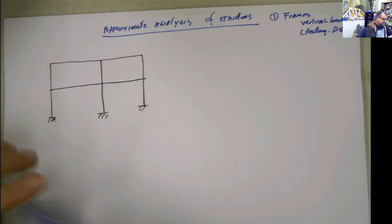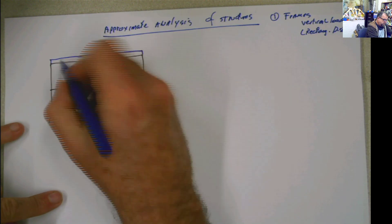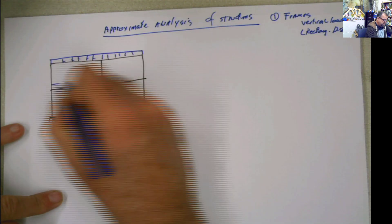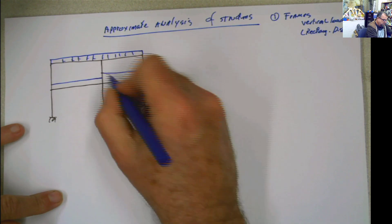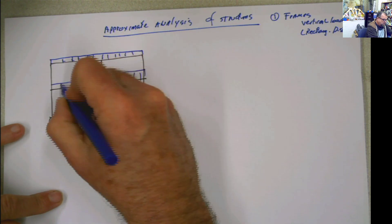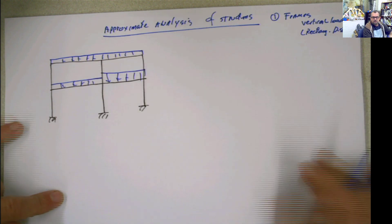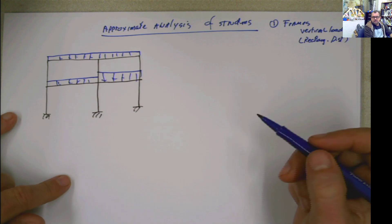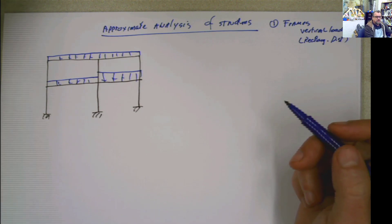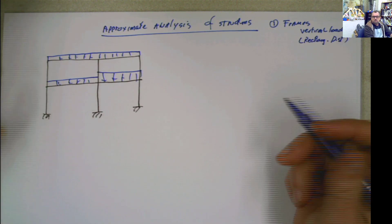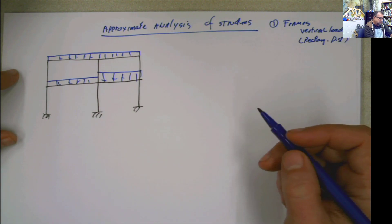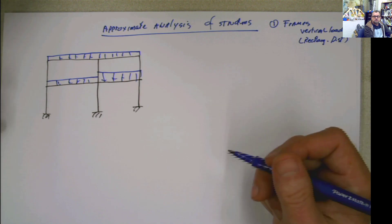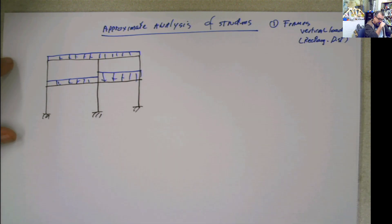This is a two-story frame with distributed load. The loading could be different depending on the characteristics of the structure. We have to analyze this, and by analyzing this I mean we have to determine at least the shear and moment diagrams for that structure. In order to do that, the first thing we have to do is calculate the reactions.